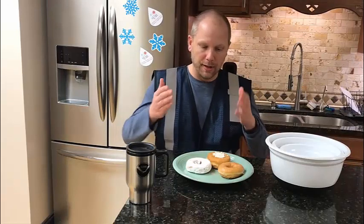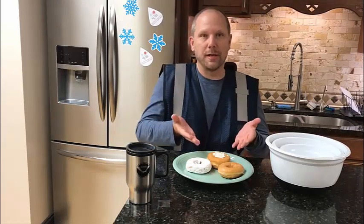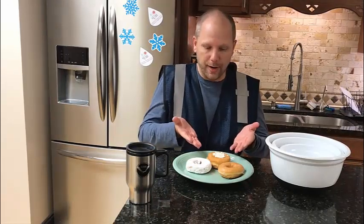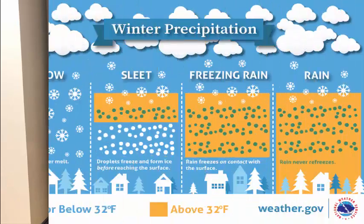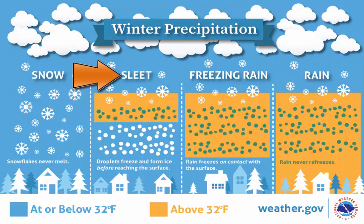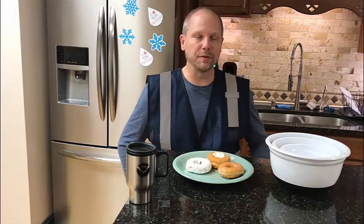The next precipitation type I'd like to talk about is sleet, which is represented by this donut right here and these little pearls on top of it. Sleet is formed similarly to snow, but a little bit different. It starts out frozen just like snow, but as it falls through a warm layer, the precipitation melts into liquid, but is allowed to refreeze as it gets back into a cold layer before it hits the ground.